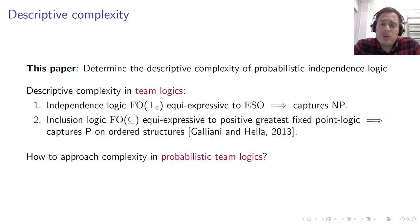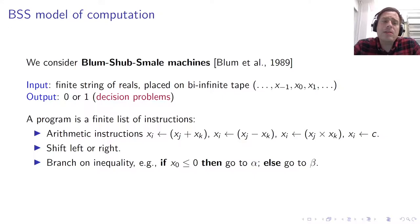These classical results do not seem to directly relate to probabilistic team logics, because in probabilistic team logics the central notion is a probabilistic team, which is a function from a finite domain to the real numbers. We therefore need a computational device that can work on real numbers directly. Indeed, such a device exists: it is called the Blum-Shub-Smale (BSS) machine, which can decide languages consisting of strings of real numbers.